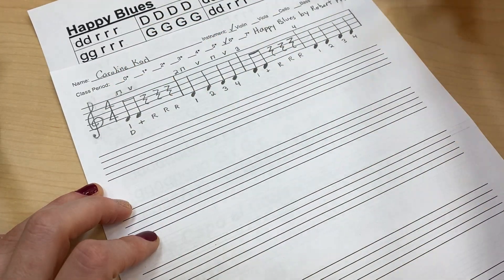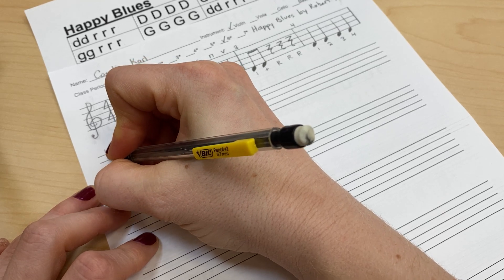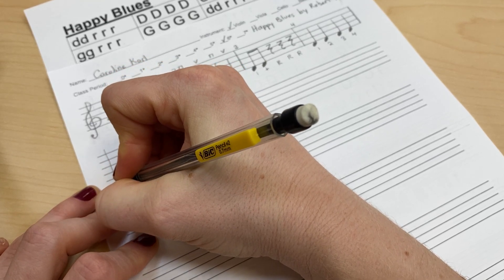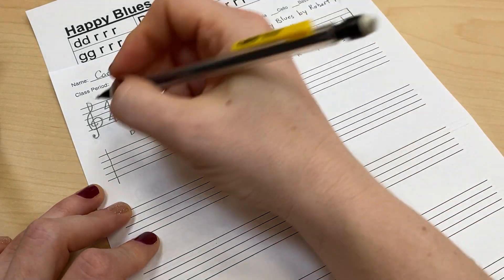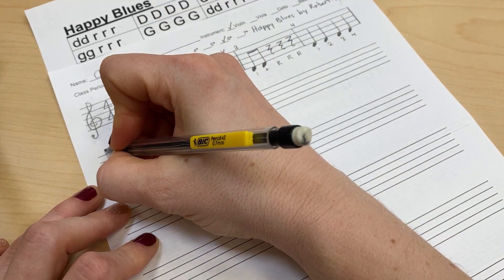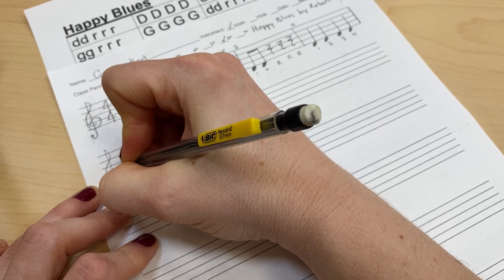So the first thing we're going to do is draw the treble clef. I'm going to do my line coming down, and if you want to, you can do the curlicue like I did here, but I'm not going to do it right now. Then we're going to take this and bring it down and come around like this.